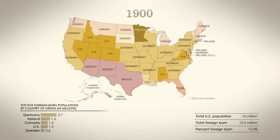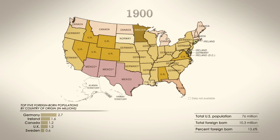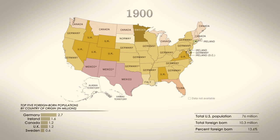Fast forward to 1900, the turn of the century, when the territorial boundaries of the continental United States are settled. For the first time, Norwegians, Swedes, and Italians were the largest groups coming to the states of South Dakota, Minnesota, and Louisiana, respectively.